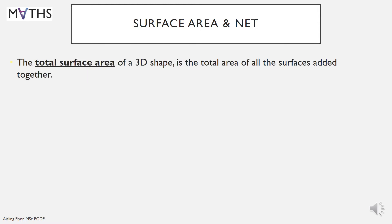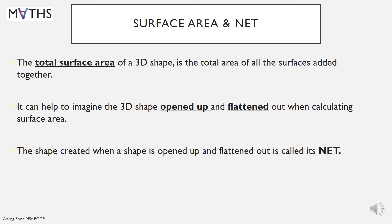Surface Area and Net. The total surface area of a 3D shape is the total area of all the surfaces added together. It can help to imagine the 3D shape opened up or flattened out when calculating surface area. The shape created when a shape is opened up or flattened out is called its net.